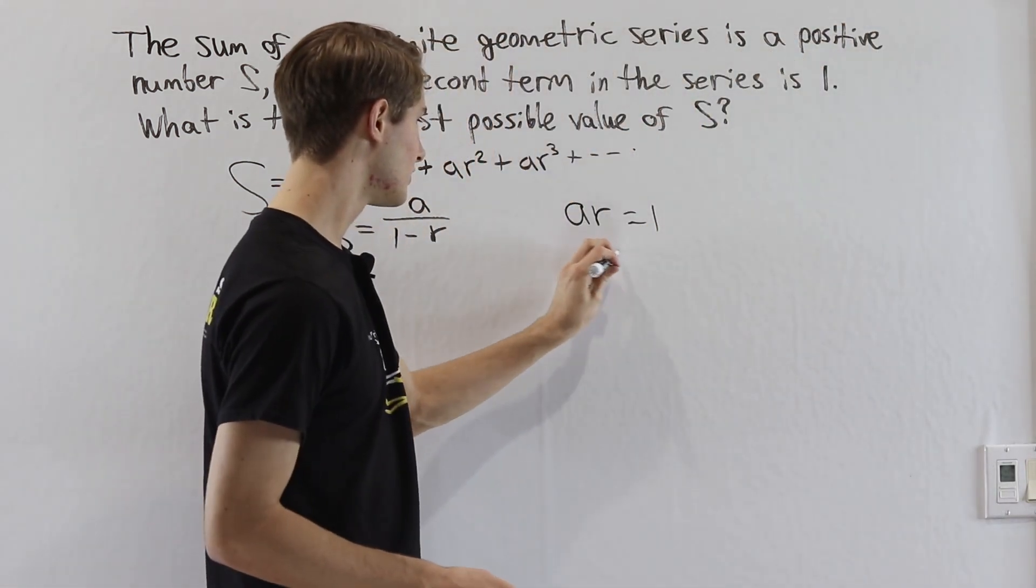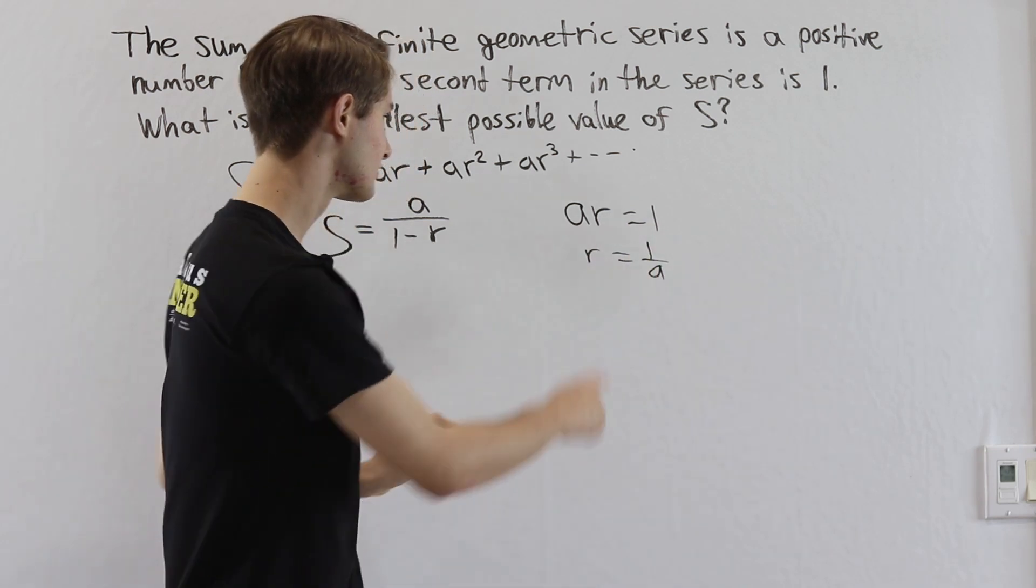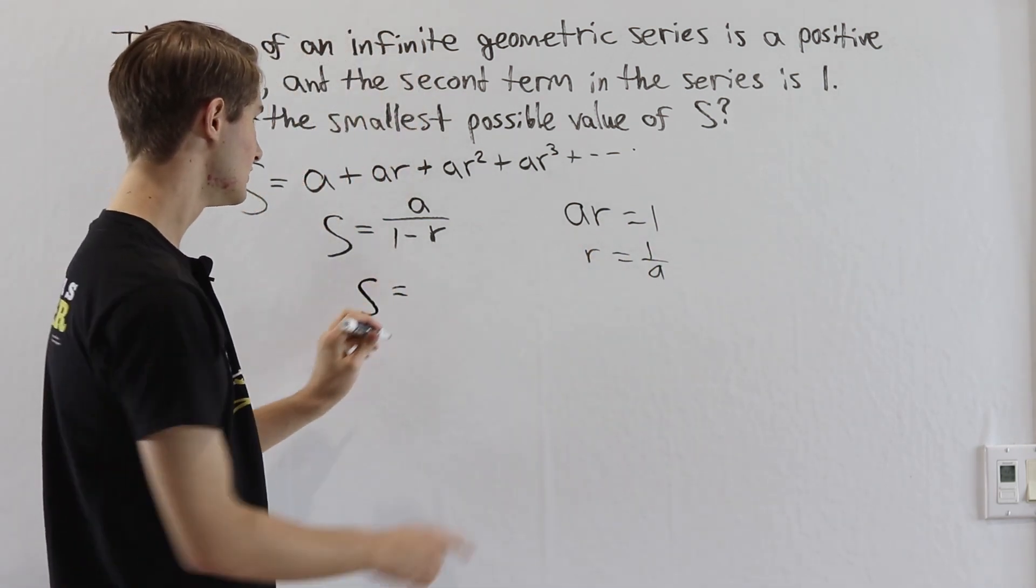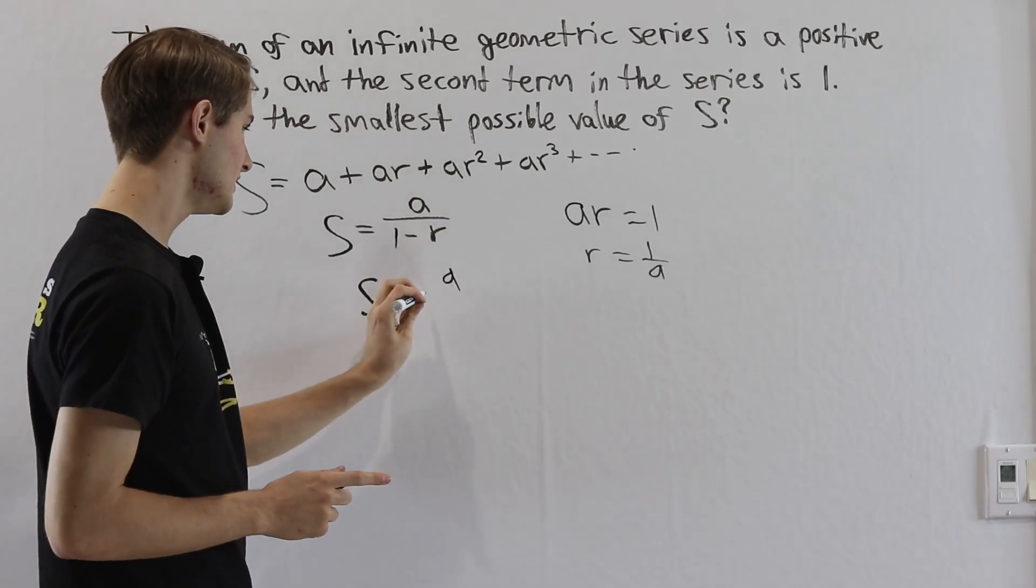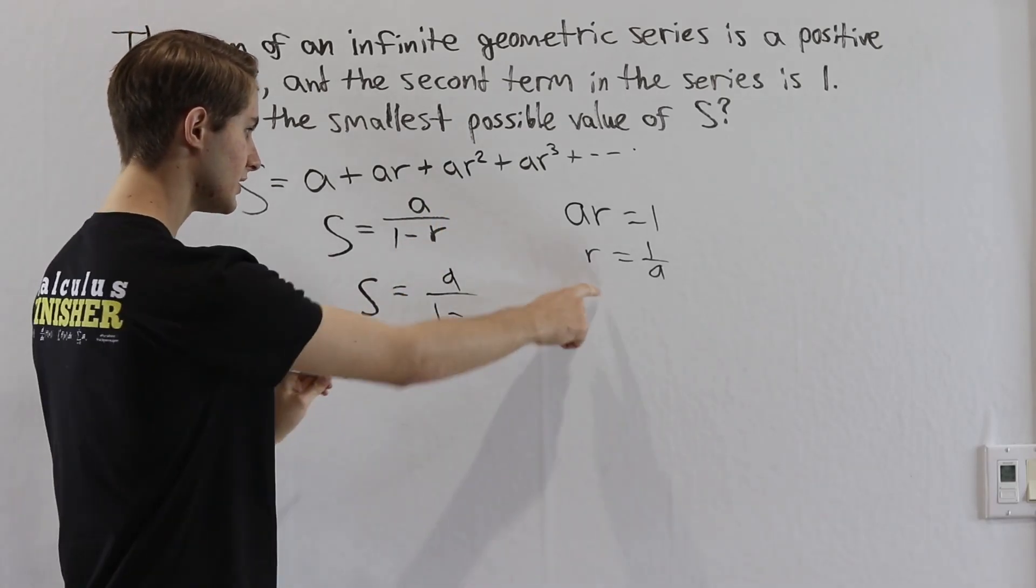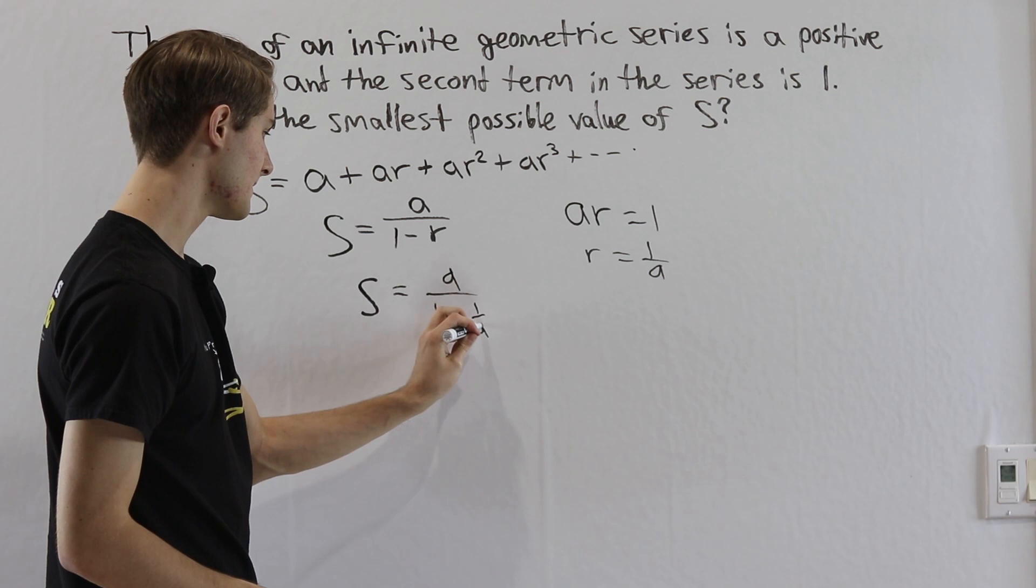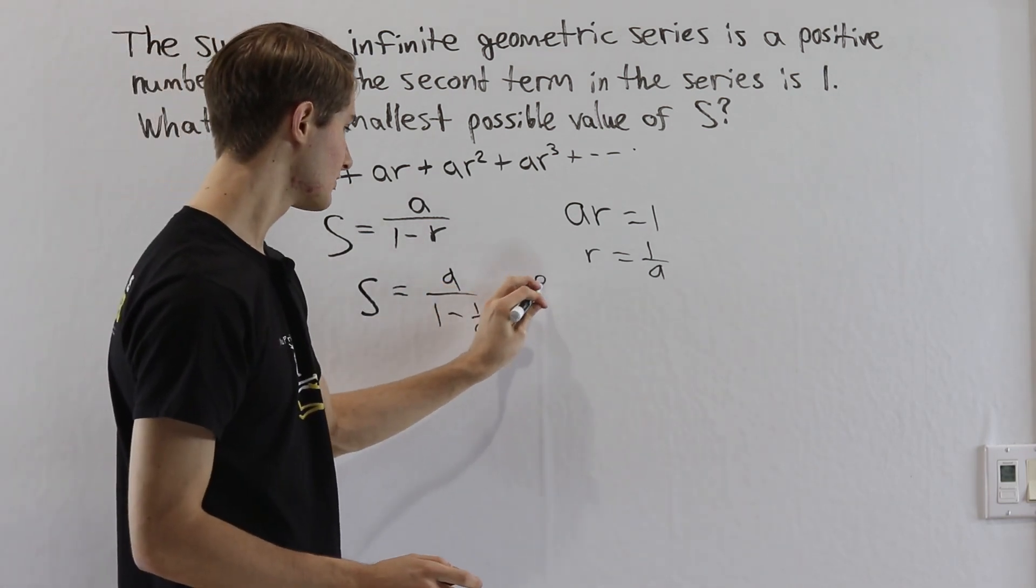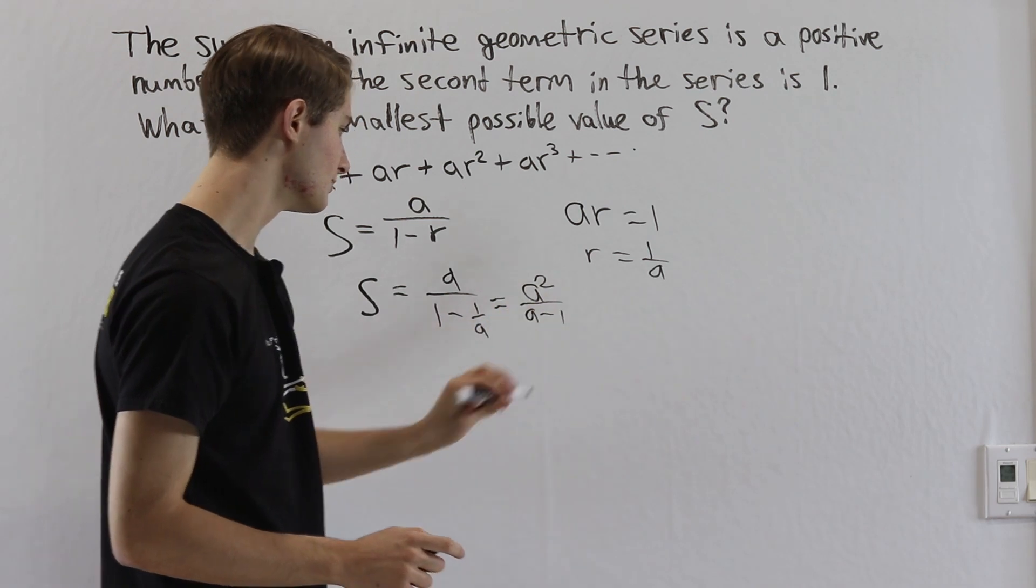First of all, we could let r equal 1 over a, just solving for r in this equation here. And then we have that s is equal to a on the top and then divided by 1 minus r equals 1 over a. And if we multiply the top and bottom by a here, we get a squared over a minus 1.